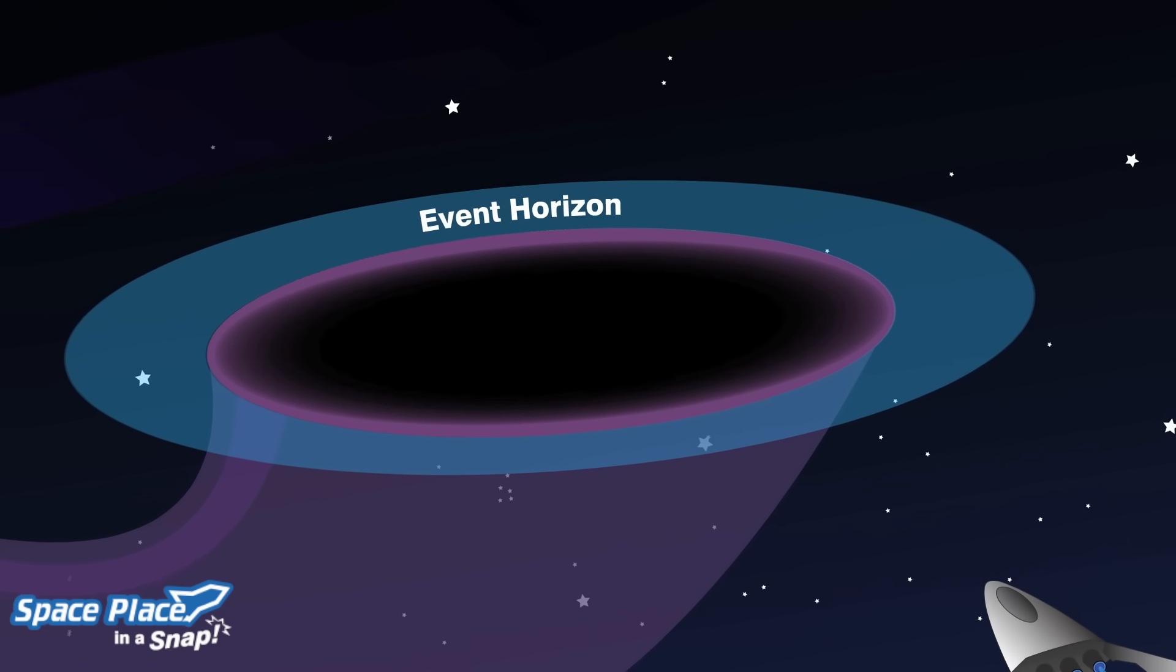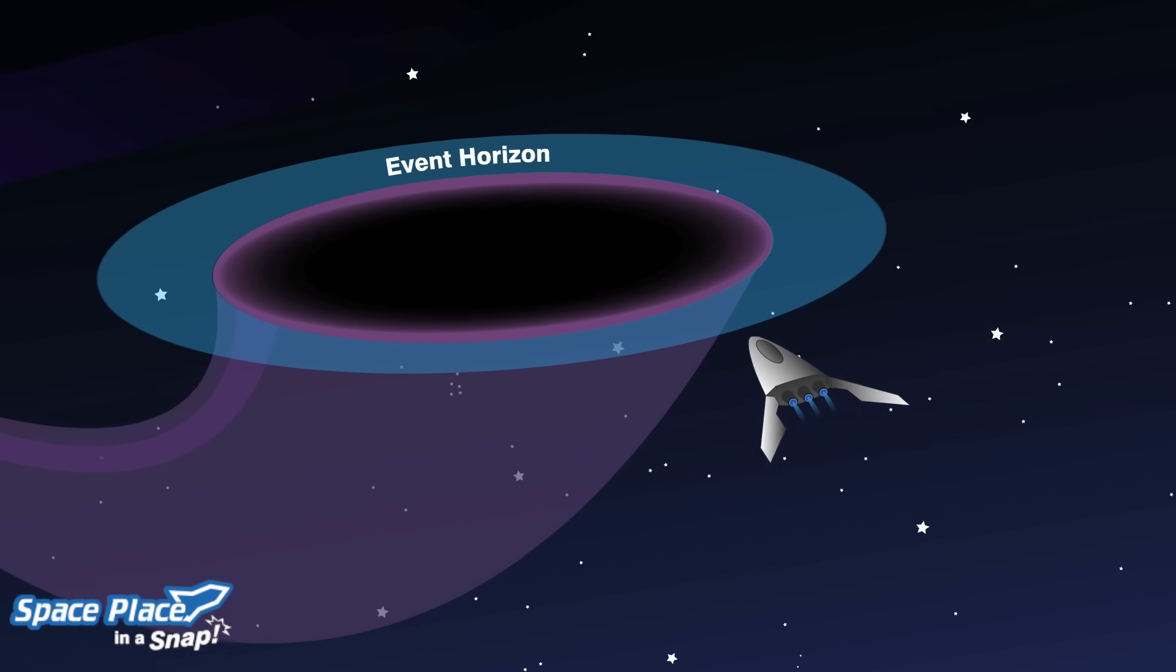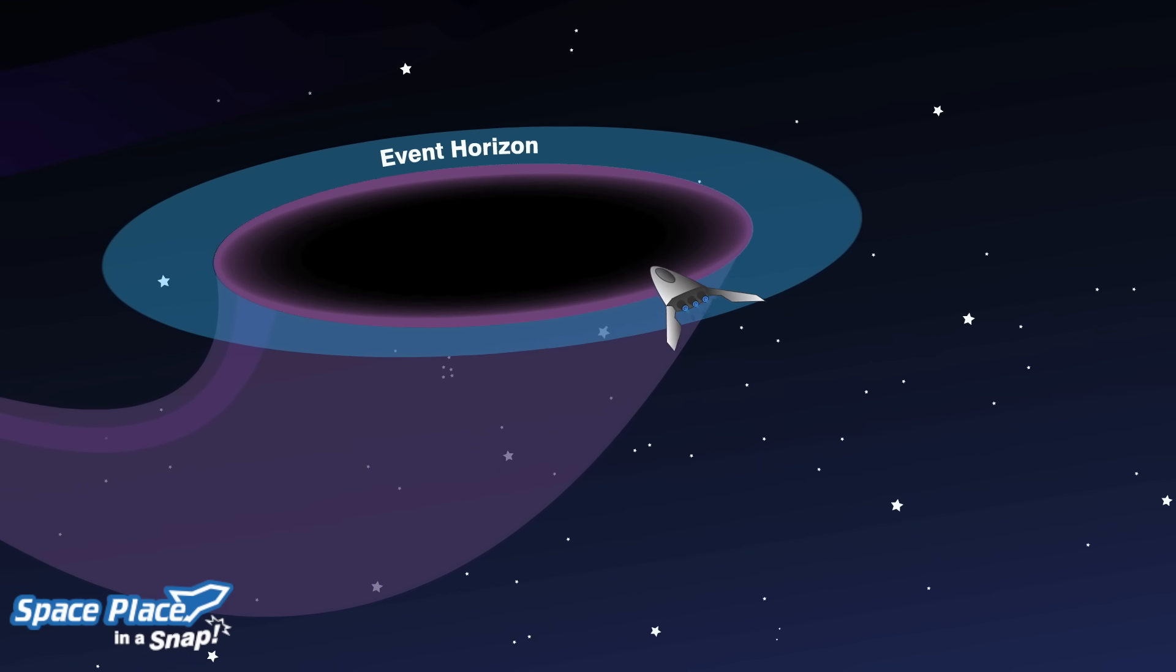What would happen, you might wonder, if we took a spacecraft near a black hole's event horizon? The answer? Spaghettification.